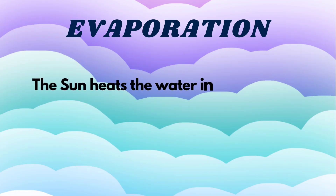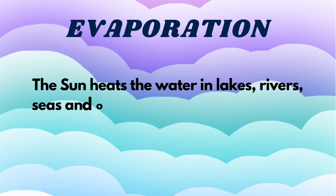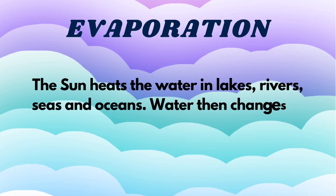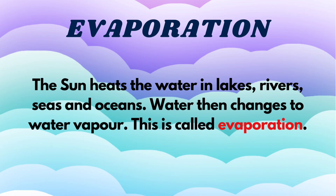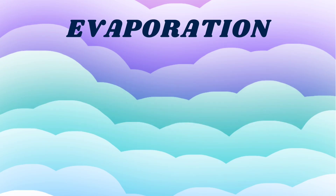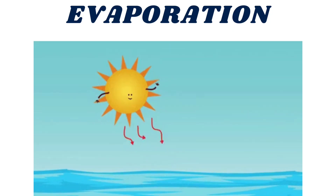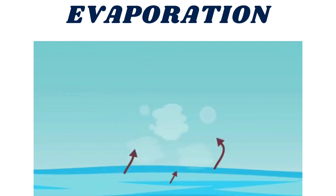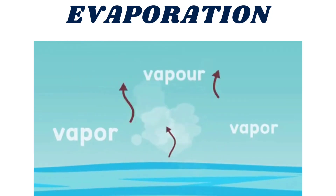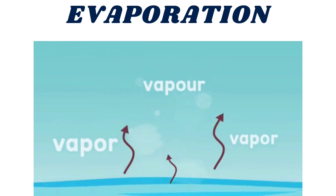Evaporation. The sun heats the water in lakes, rivers, seas and oceans. Water then changes to water vapour. This is called evaporation. See how water evaporates.